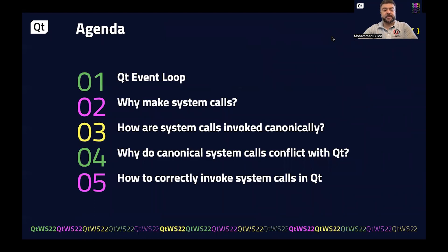Here's an agenda of today's talk. First, we'll go over the Qt event loop and understand why anybody would want to make system calls. Then we'll talk about how system calls are invoked canonically and why that canonical mechanism conflicts with Qt. Finally, we'll see how to correctly invoke system calls in Qt.